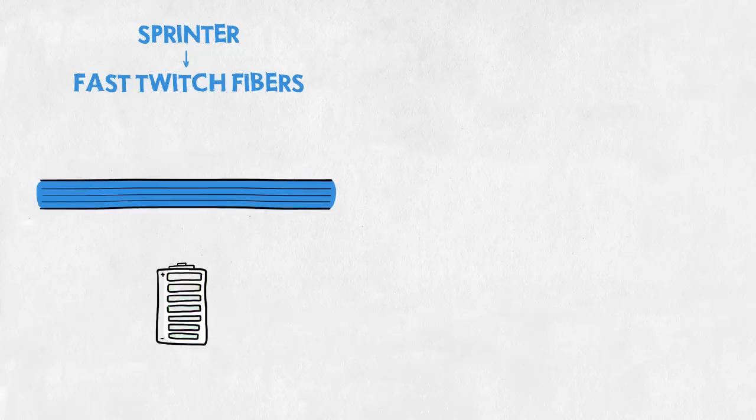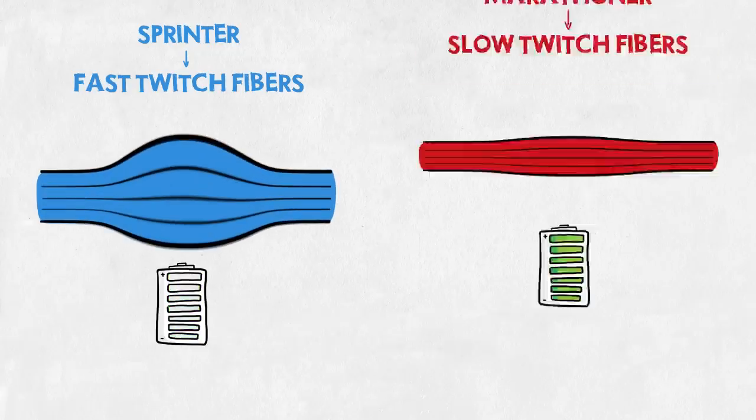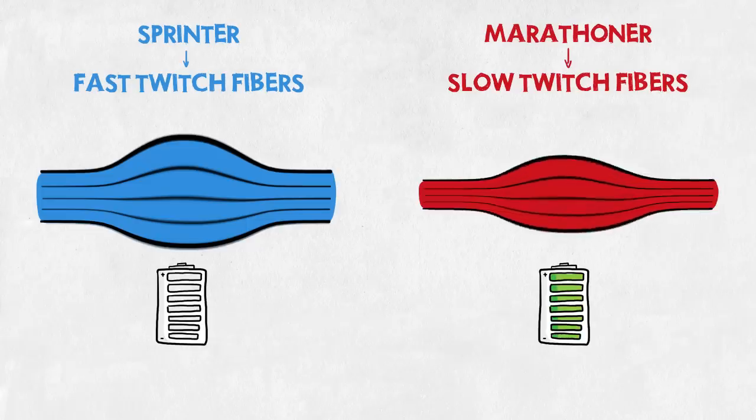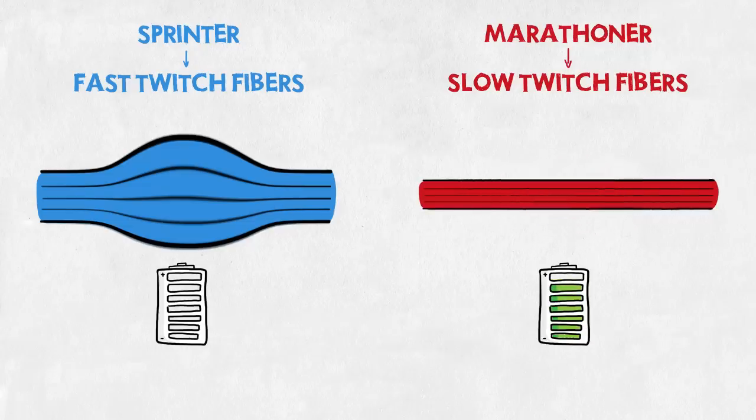When trained, fast twitch fibers naturally become big and heavy. On the other hand, a marathoner uses mostly his slow twitch fibers. Not as reactive and speedy as their fast twitch brothers, but they can work non-stop for hours.